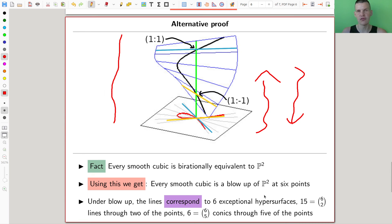So the lines correspond to natural things, there are those six exceptional hypersurfaces people knew already, I haven't discussed them, don't worry about them too much, but then there are 15 and 6, 15 is 6 choose 2, this is the lines through two of the points. There are 15 of them, 6 choose 2, and then there are conics through five of the points, and if you just pull them up into the blow-up, then they will give you those lines.